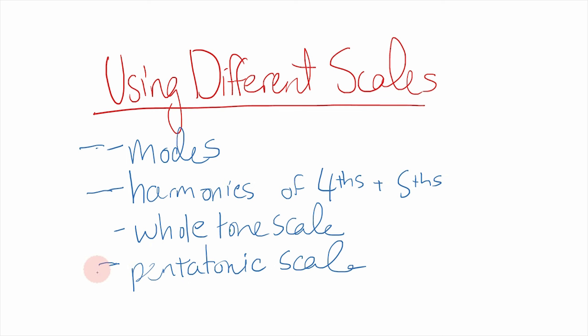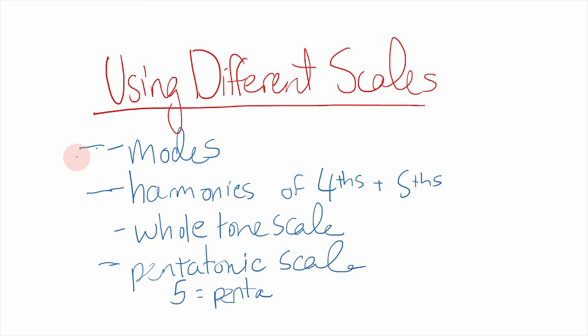Then we have the pentatonic scale, which was popular as well. Pentatonic is a five-note scale — penta equals five — that originates with folk music from all different kinds of places, from Scotland to Ireland to China. Lastly, rhythm: a lot of impressionist music lacks a steady defined rhythm. It's more fluid, more changeable. It's not the kind of music you're necessarily going to tap your toes to.